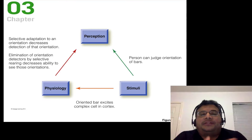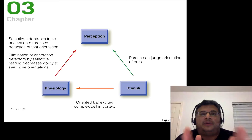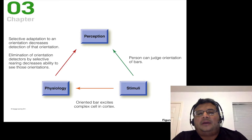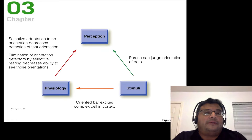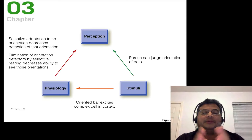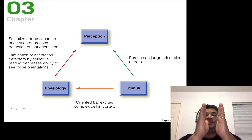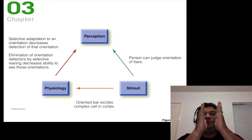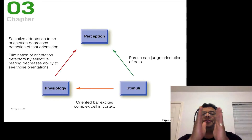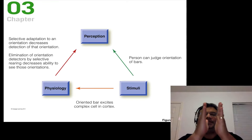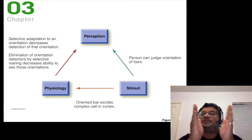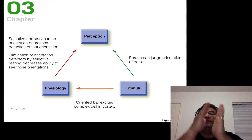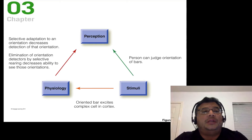Normally, a person can judge the orientation of bars — they see what direction bars are oriented. The way we do this is whenever that stimulus hits our retina and travels through the pathway into our cortex, the right complex cells are activated. If we do selective adaptation by exposing you to those same bars for a very long time, you're going to do a much worse job at detecting the orientation because those complex cells get worn out from firing too much.